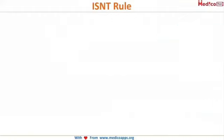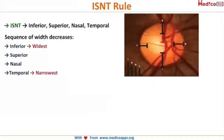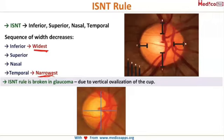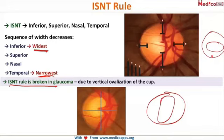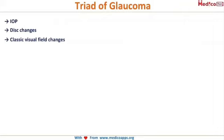The ISNT rule states that the inferior neuro-retinal rim is the widest part, followed by the superior, then the nasal, and then the temporal, which is the narrowest. In glaucoma this rule is broken because the cup undergoes vertical ovalization, meaning the inferior NRR is no longer the widest part.